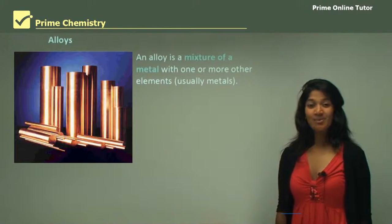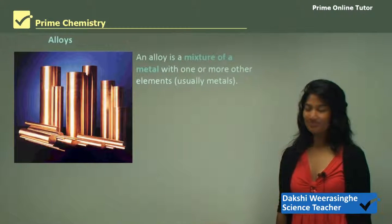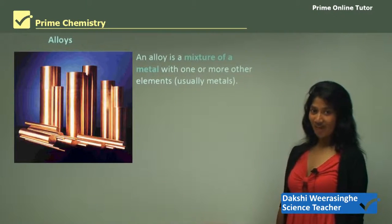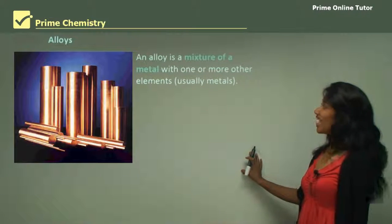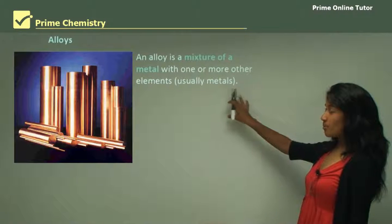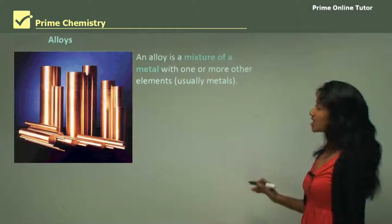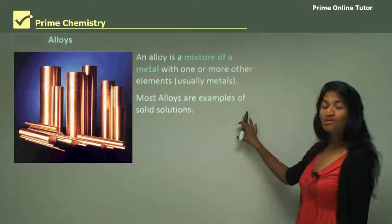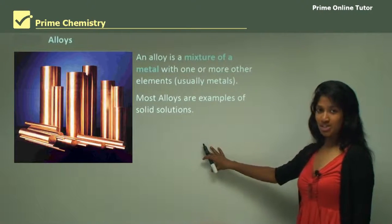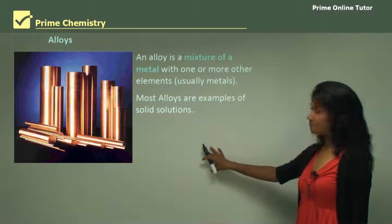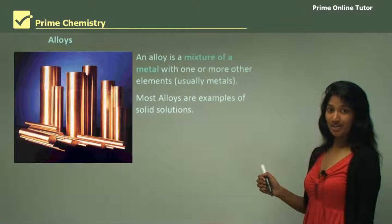Hello everyone. Today we will be starting on the third section of the historical uses of metals. We'll be focusing on alloys today. An alloy is a mixture of metals with one or more elements, usually metals, combined together. So there are examples of solid solutions. You probably did liquid solutions in year 10 and year 9, but now we'll be focusing on solid solutions, which are alloys.